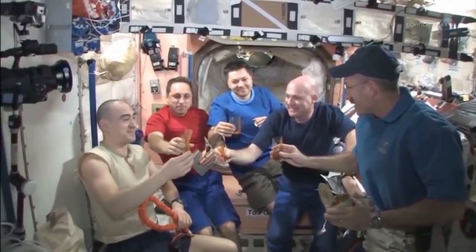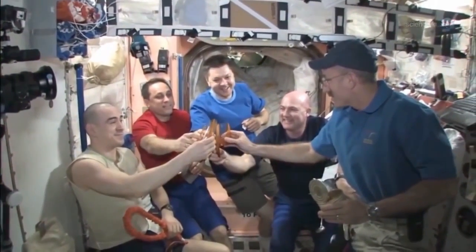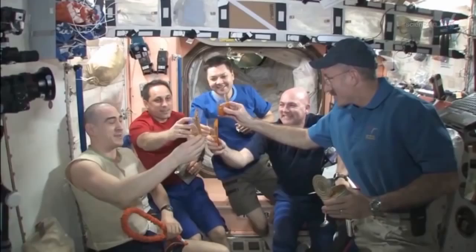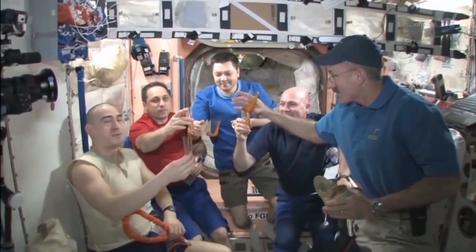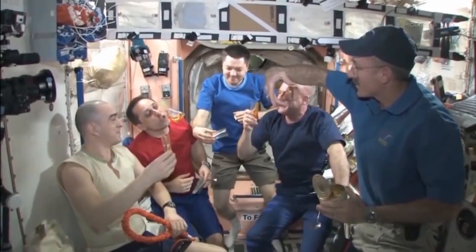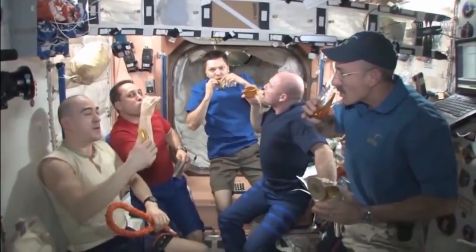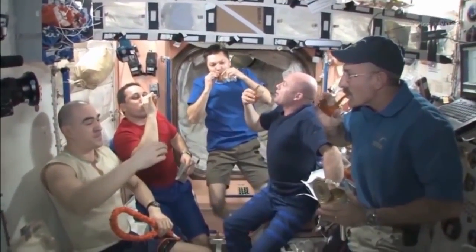This may well be what future space colonists use when they want to have a celebration. Indeed, the patent application specifically mentions toasting as one of the uses of the device. It's easy to imagine what they might be toasting. Toilets and air conditioners and fuel tanks and recycling systems, all working better thanks to capillary flow experiments on the space station.